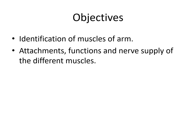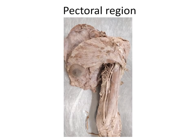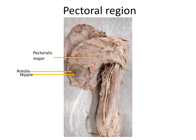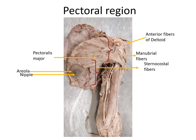Moving to the muscular part. In the pectoral region, this specimen has the skin, superficial fascia, and deep fascia removed. We can see the nipple region with the areola - the darkened area around it. The large muscle present is the pectoralis major muscle, which has two types of fibers: those coming from the sternocostal aspect and those from the clavicular part. Between the deltoid and pectoralis major there is a groove called the deltopectoral groove, which is the site of passage of the cephalic vein.